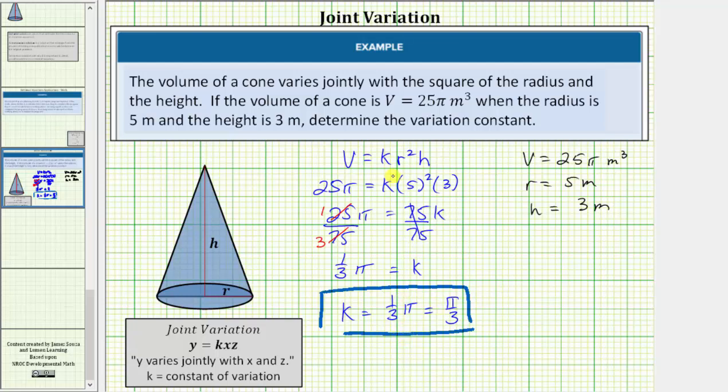To do this, we substitute k back into our volume formula. So we'd have the volume V equals one-third π times r squared times h. So this is the volume formula for a cone.